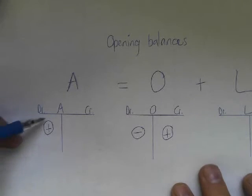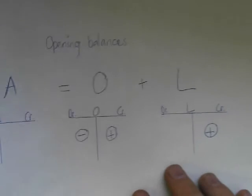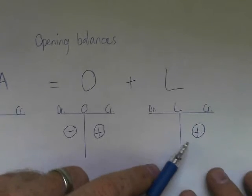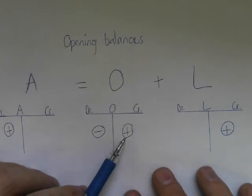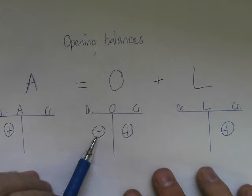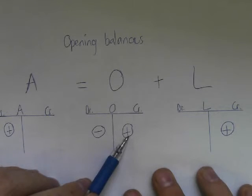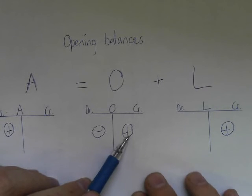So just to recap: for assets, the opening balance will be where the plus is on the debit side. For liabilities, the opening balance will be on the credit side where the plus is. And for owner's equity, it depends if the money of the business becomes less or more. That's all on opening balances.